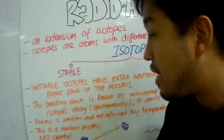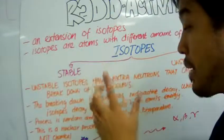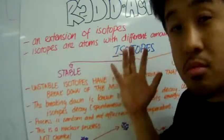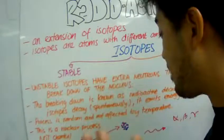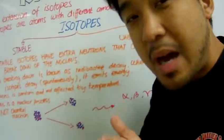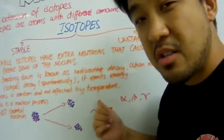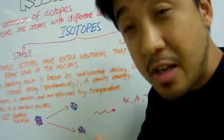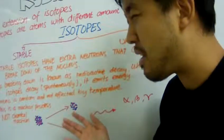The process of radioactive decay is completely random. It just happens without any warning. And it's not affected by temperature. The process is completely random and not affected by temperature.